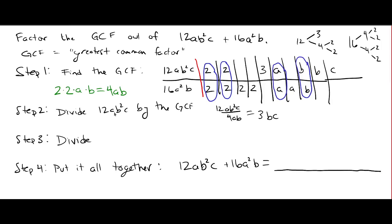Step 3, we do the same thing, but with the next term, 16a squared b. We divide that by the GCF, greatest common factor. And we find 16a squared b over 4ab. So we've got 16 divided by 4 is 4. A squared divided by a, that leaves 1a. And b divided by b is just 1. So we only have 4a left here.